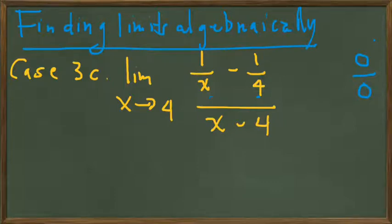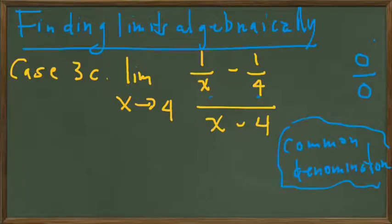So what are we going to do in this case? Well, the first thing that we want to do is to get a common denominator in the numerator. So we're going to get a common denominator in the numerator, which is going to be the product of these two denominators, x and 4, or 4x. So let's set up the problem that way.